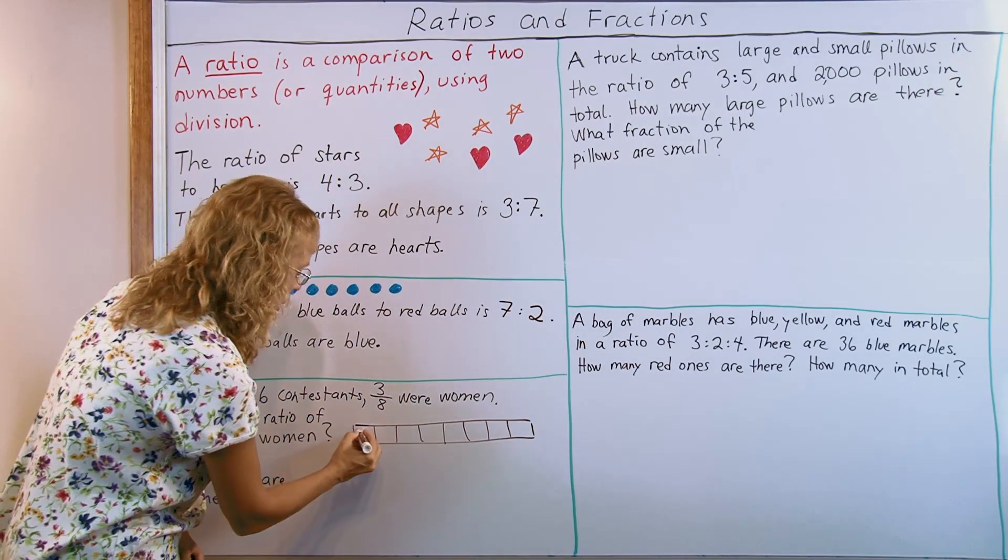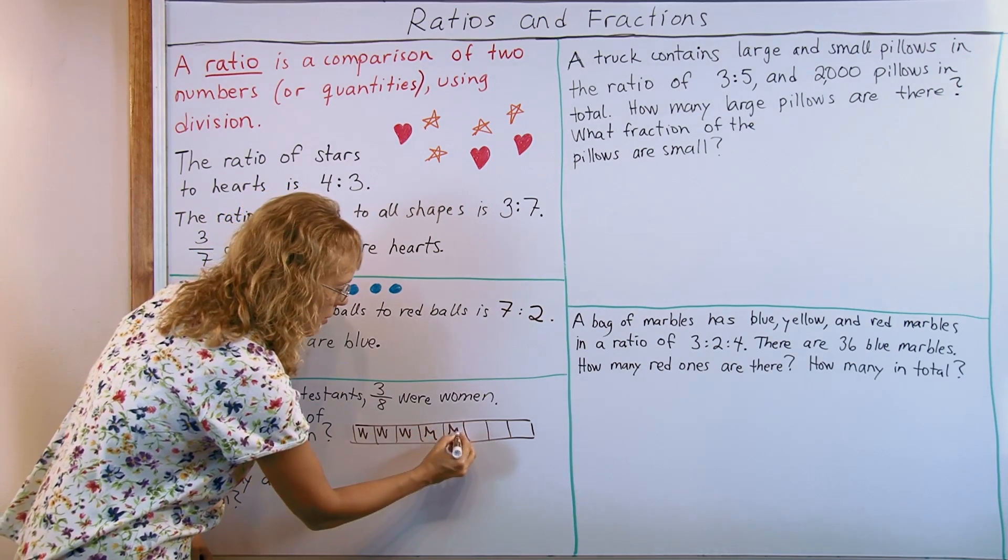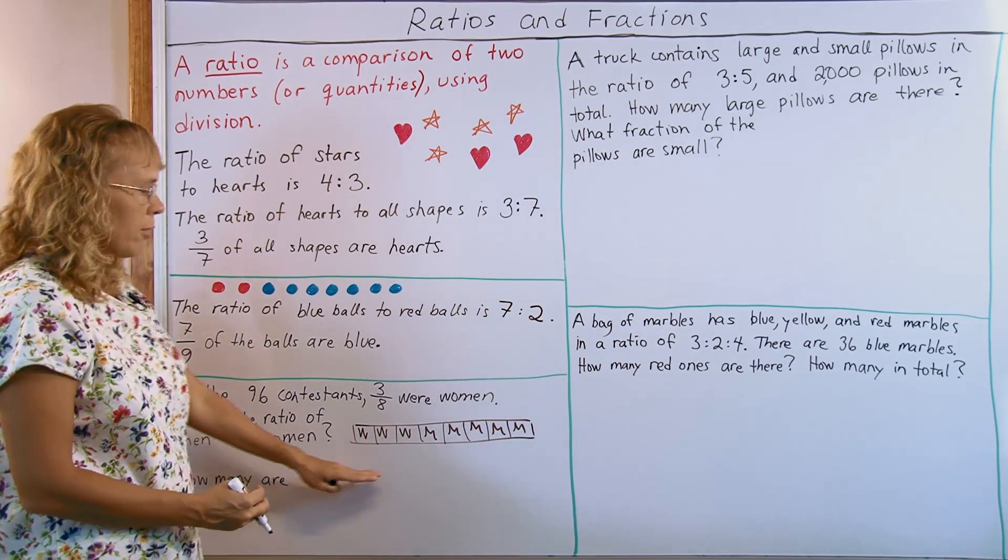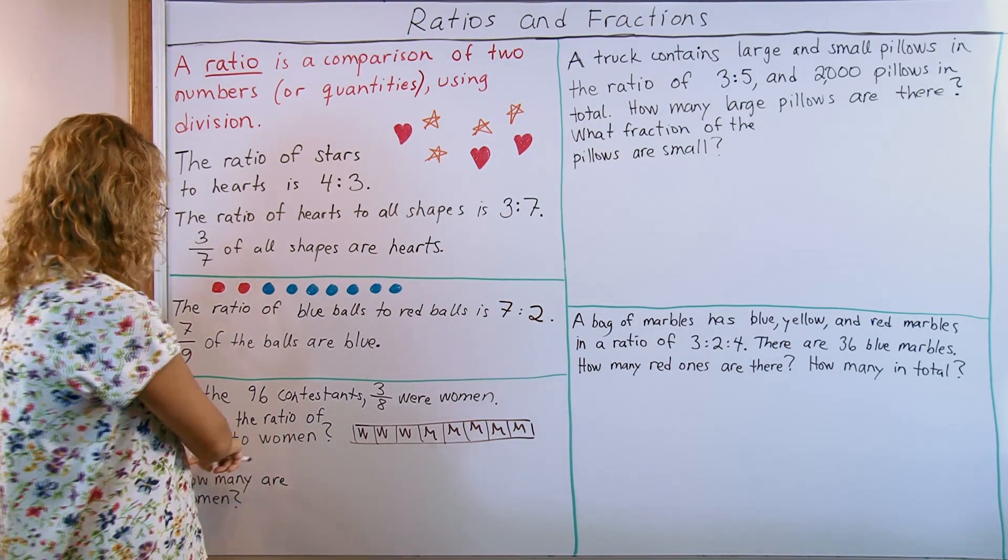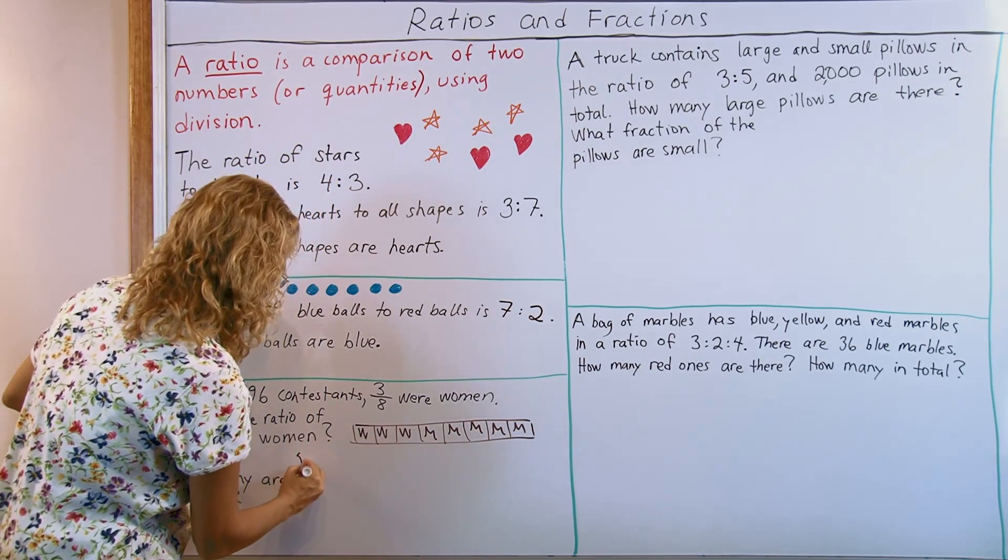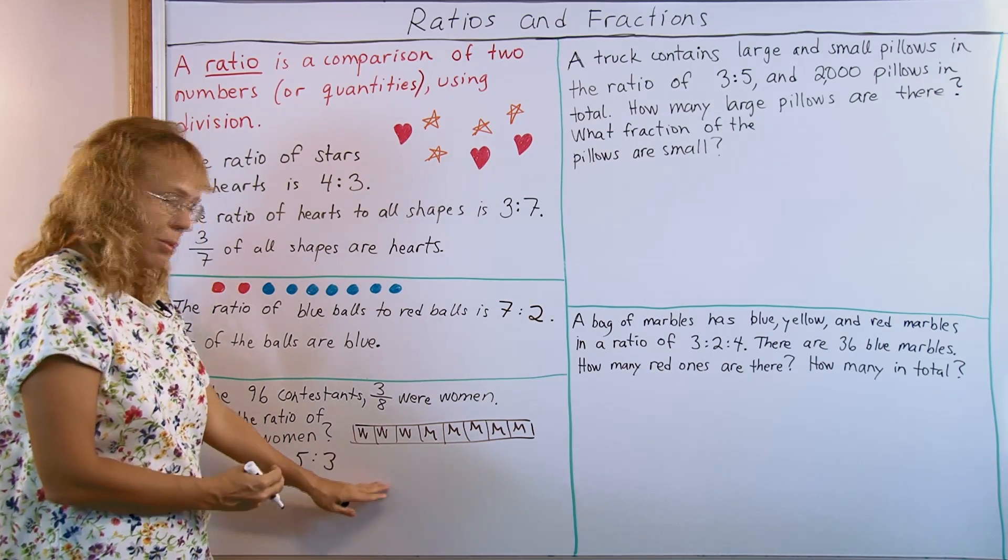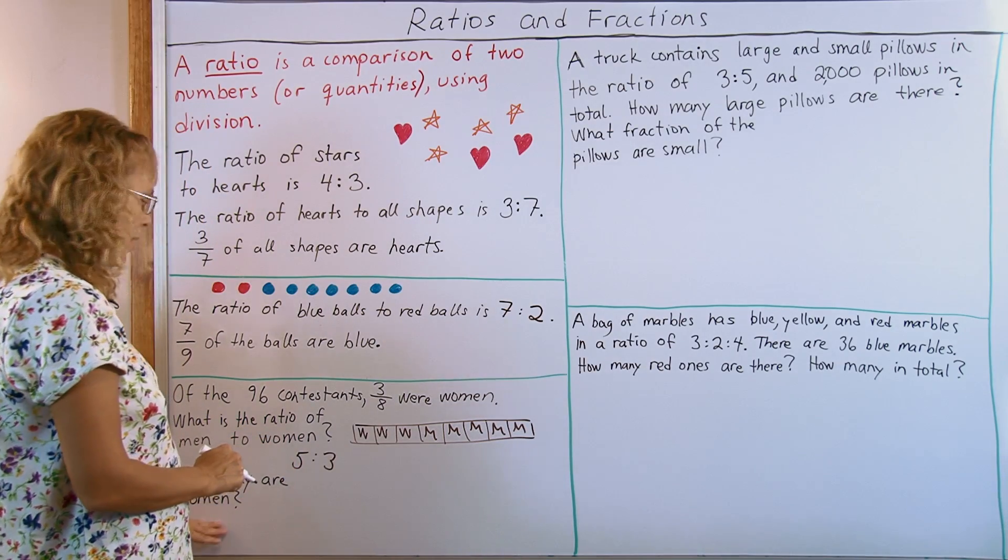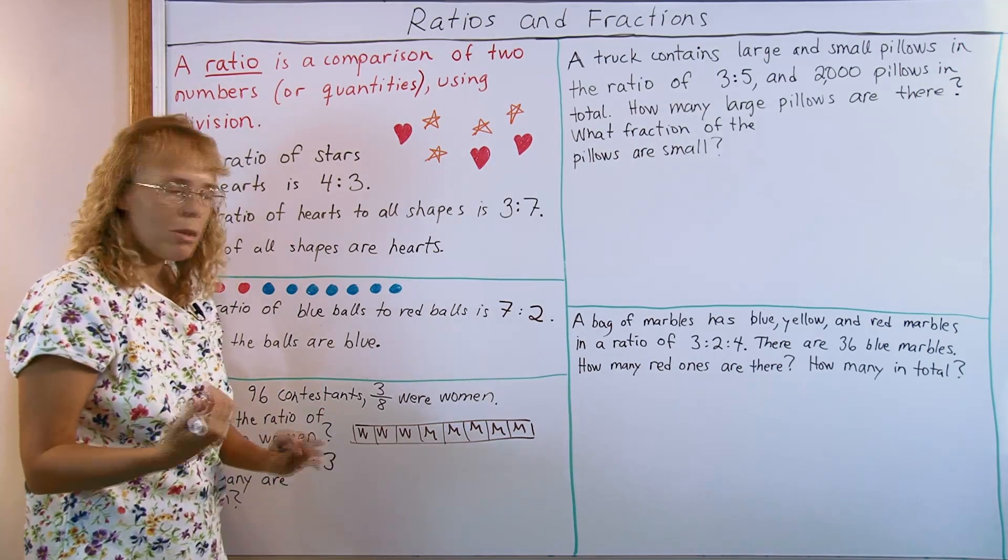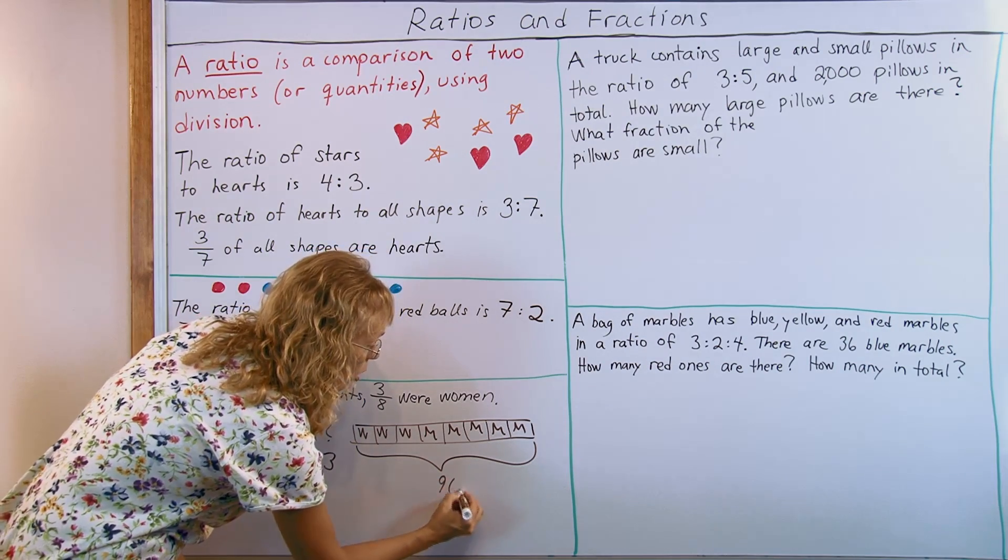And 3 of those 8 parts are women, so let's mark them like this. The rest would be men. And now the ratio: we can see from here directly the ratio of men to women. Men are 5 parts and women are 3 parts, so the ratio is 5 to 3. It's simple, right?